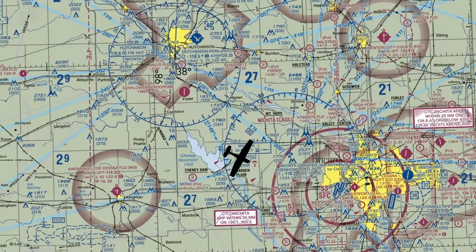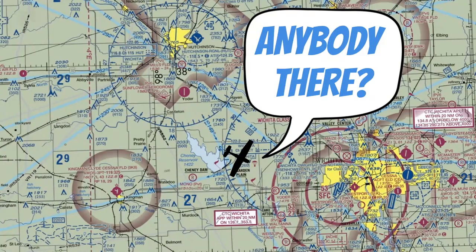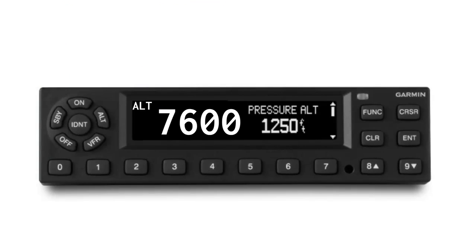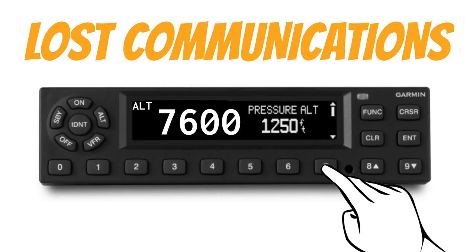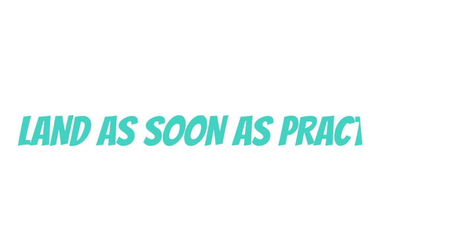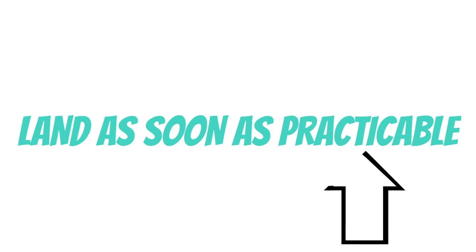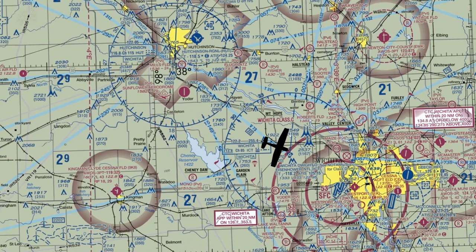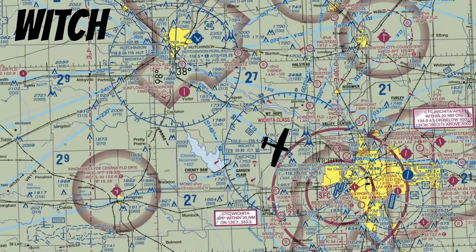Another squawk code that might come in handy if your radio quits working is 7600 — this is the code you put in your transponder if you lost communications with ATC. If this happens under visual flight rules in an area that requires two-way radio communication, the FAA says you need to land as soon as practicable. That's the word used in Section 4 of the AIM. I take that to mean you can land at the airport you originally intended on landing at — in this case, Wichita.